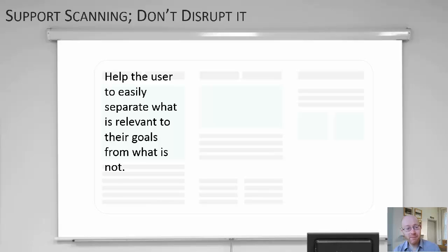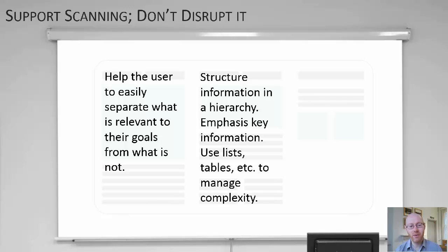So the main summary in this is that we should support scanning. It's what we try to do. So in our designs, we should try to support it. We shouldn't disrupt it. That would be a bad thing to do. So help the user to easily separate what is relevant to their goals from what is not. That's providing a clear hierarchy that permits the user to scan down through it. So we want to structure information in that hierarchy. We want to emphasize the key points of information that allows the user to parse through it. And for complex hierarchies, you get into using lists and tables and other ways of managing that complexity.